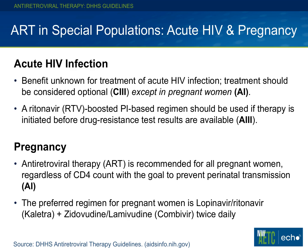Finishing with special populations: the DHHS guidelines address acute HIV infection. The benefit of treating acute HIV infection is unknown and it should be considered optional. The exception is a pregnant woman with acute HIV infection, which I would consider an emergency given the very high risk of transmission to the baby. If you do decide to offer therapy in acute HIV infection, a ritonavir-boosted PI regimen is preferred, especially while waiting for drug-resistance results.